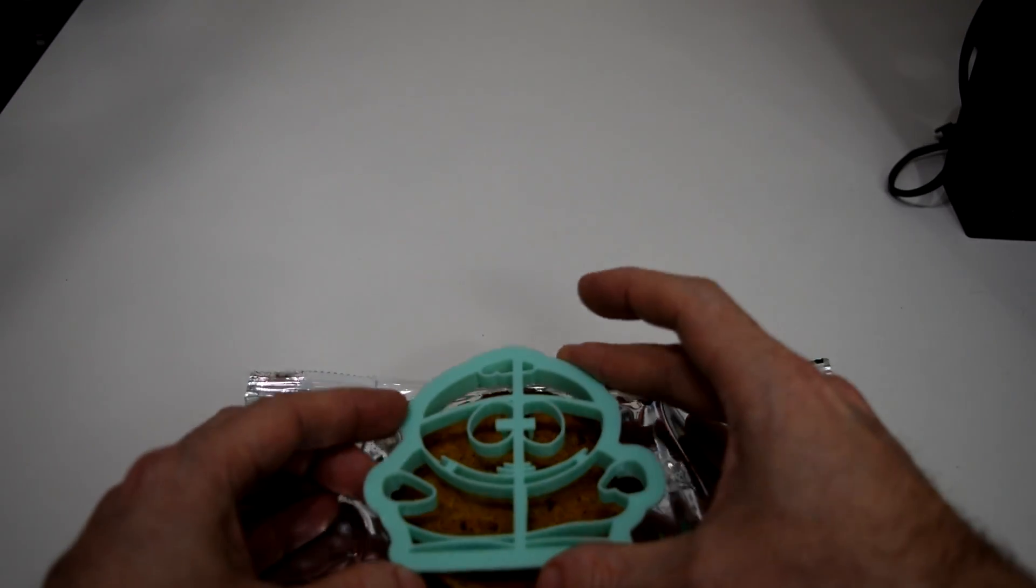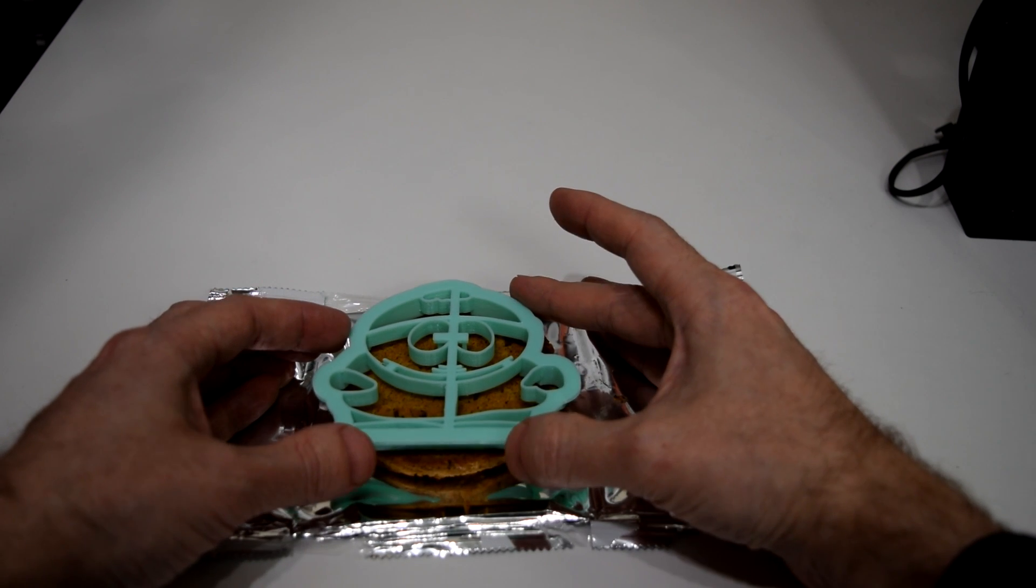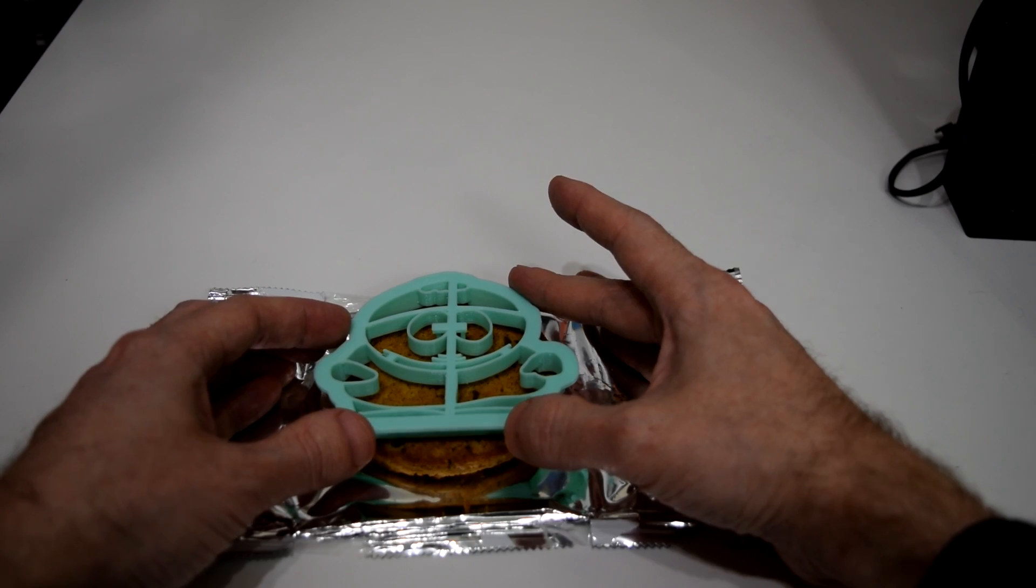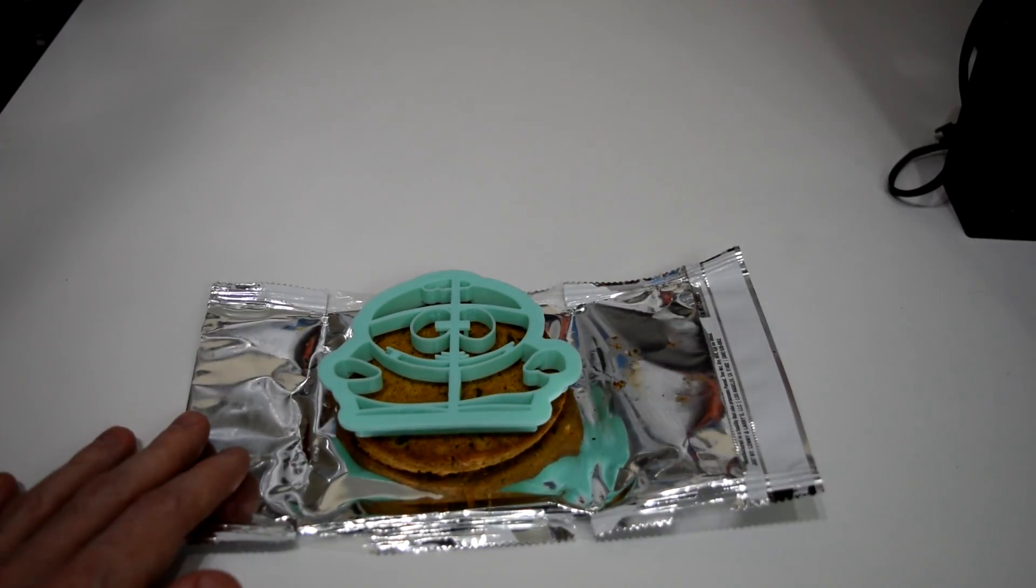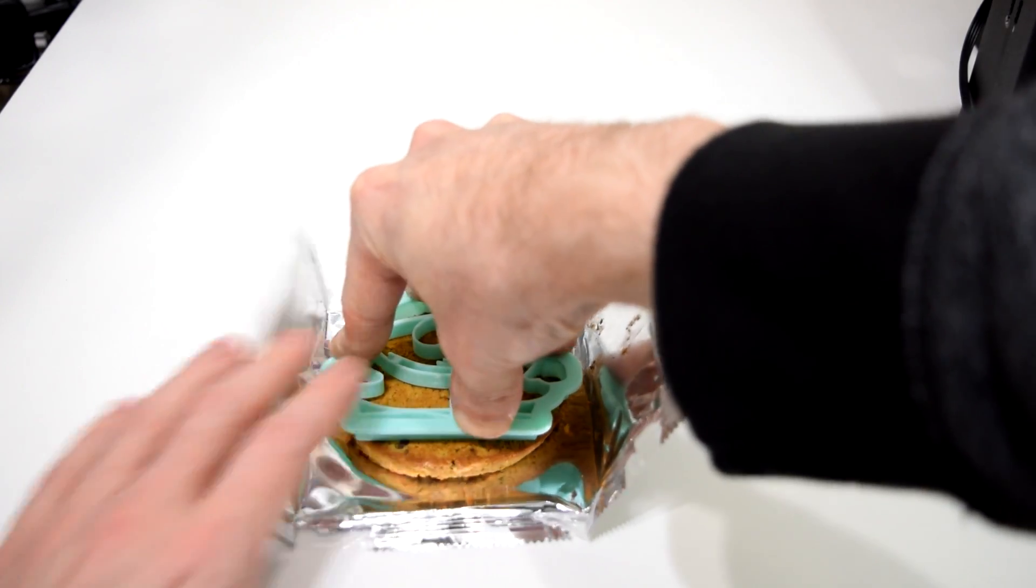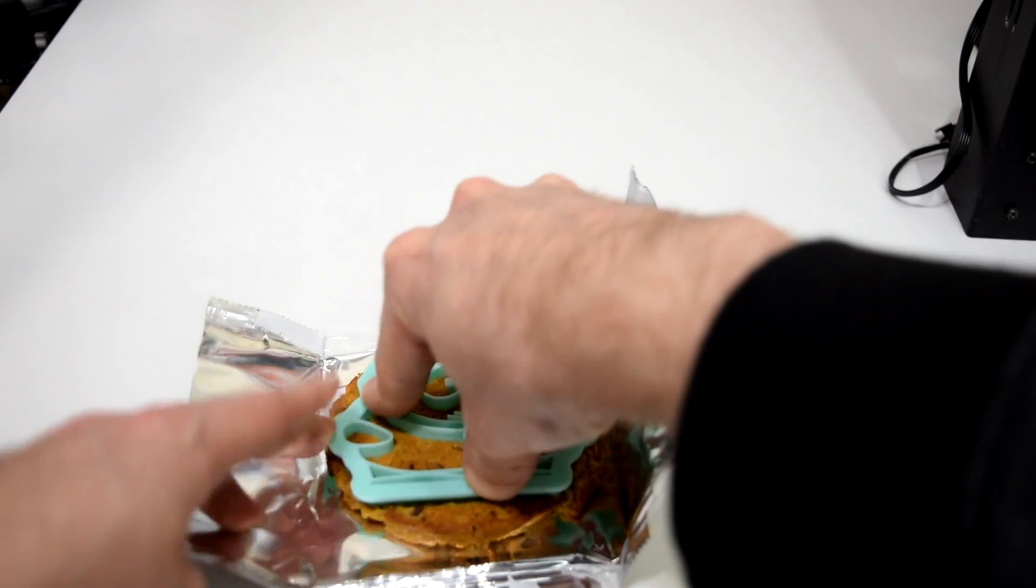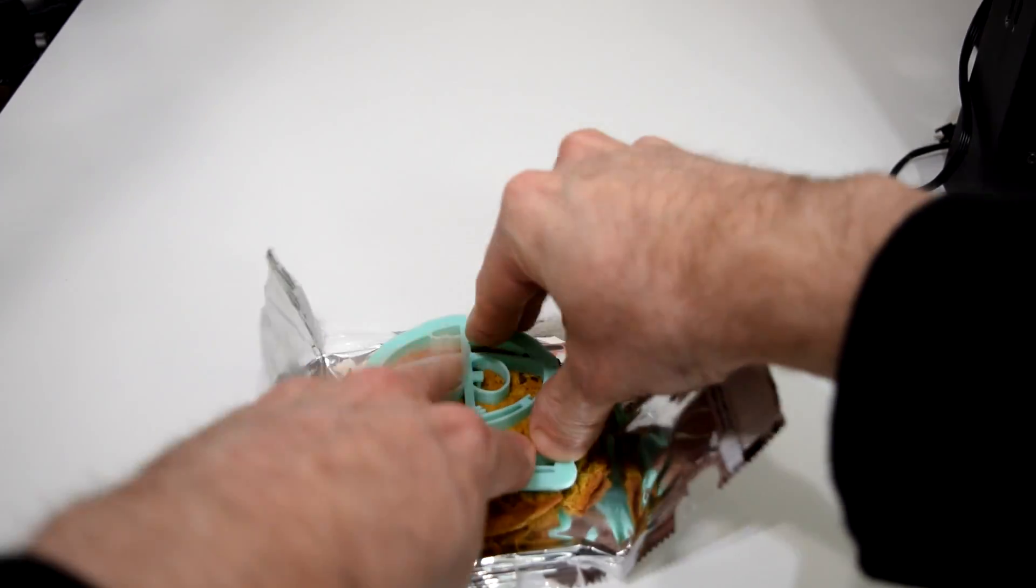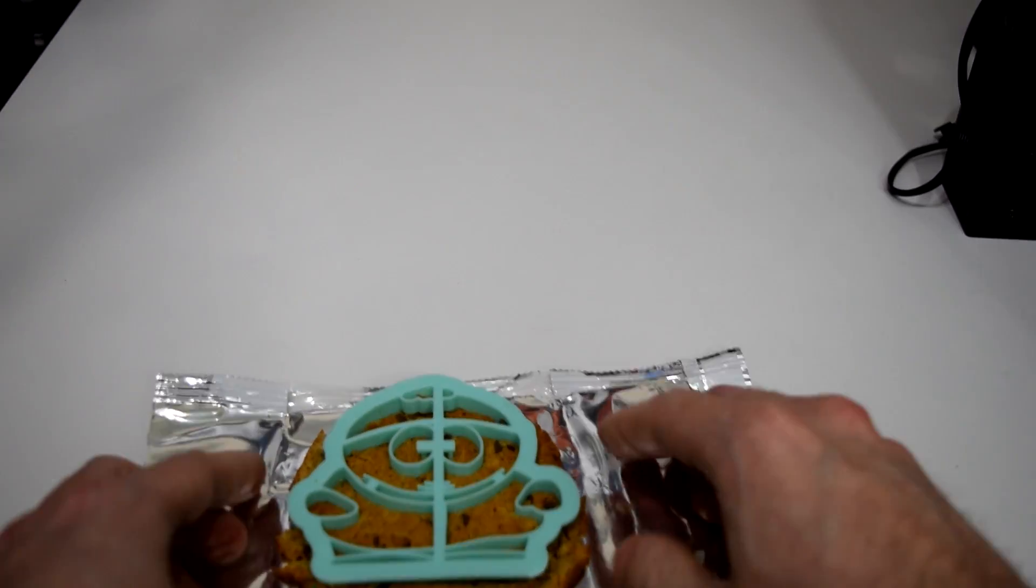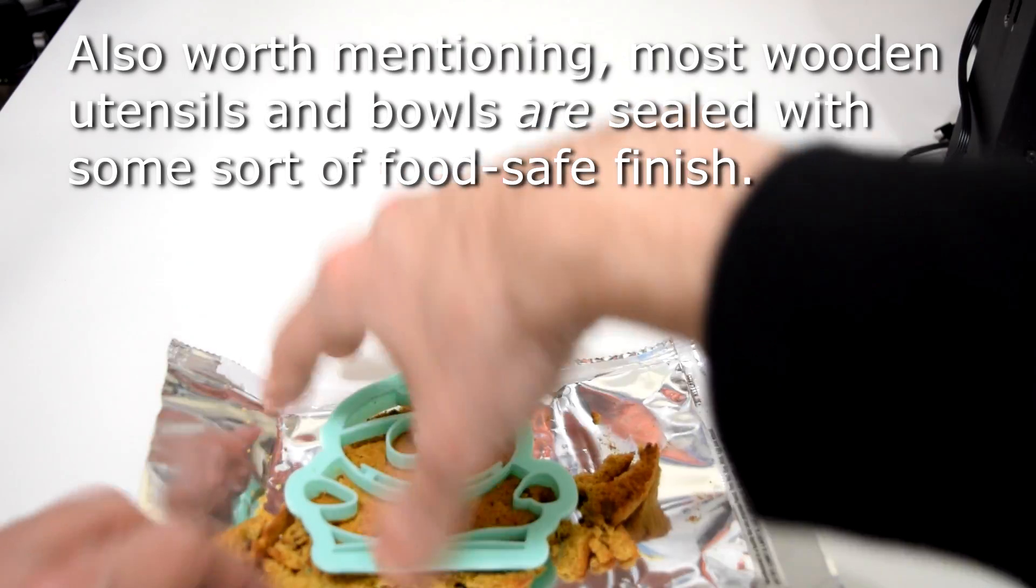For example, if you're using PLA to print a bowl or utensil, and you decide to try using it regularly to consume food, that may not be such a great idea because of the porous nature of FDM prints. The theory is that leftover food can accumulate in those pores and grow bacteria that will end up making you sick, despite your best efforts to clean the print after each use. But to be fair, wood has some of the same potential for storing food particles, and that doesn't stop people from using wooden spoons to stir their food, and you can always use some kind of food safe finish on your print to make sure that's not a problem.